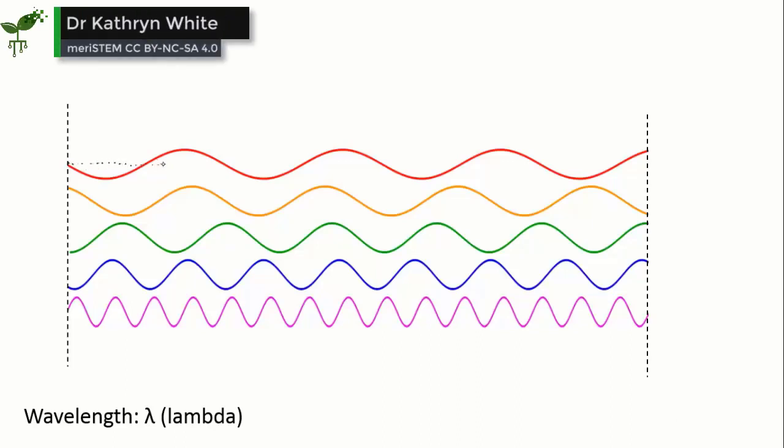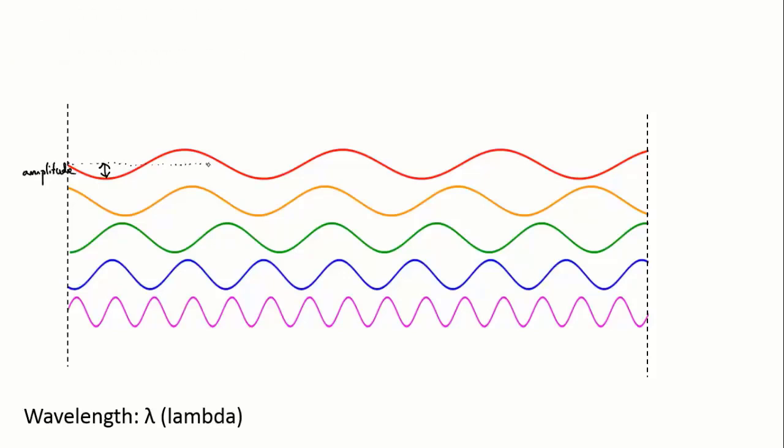You may remember from junior science the anatomy of a wave. The distance a wave wiggles from its center point is called its amplitude. All of these waves here have roughly the same amplitude, but if I were to draw one with a much bigger amplitude, it would look like this.